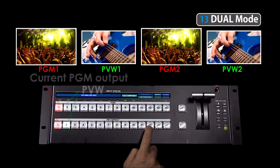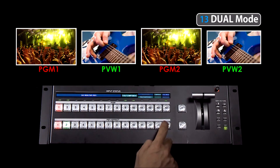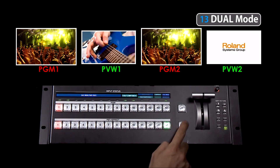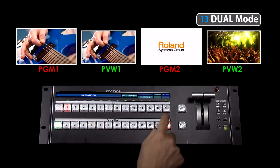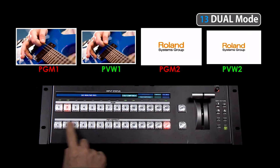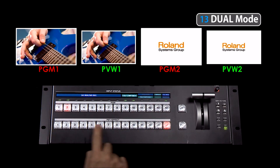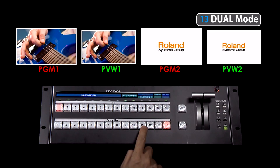Select the new output channels that you want, then select take or move the t-bar. If you want to keep one of the channels on the same image while changing another one, press the red channel again so that the green button goes out on that particular bus.